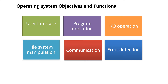First we will start with the user interface. Every OS has a user interface. There are three forms of user interface: command line interface, batch interface, and GUI that is graphical user interface. In command line interface, the user can give commands and directives to control them; these are entered into files and those files are executed. In GUI, a window system with a pointing device is used to direct I/O, choose from menus and make selections, and a keyboard to enter text.